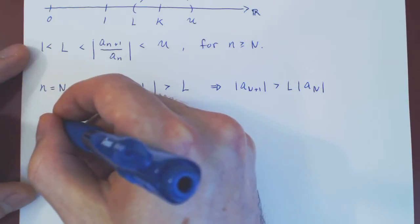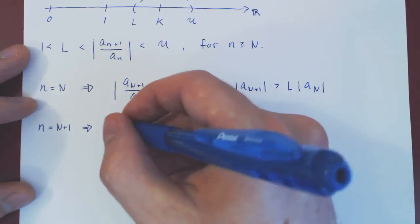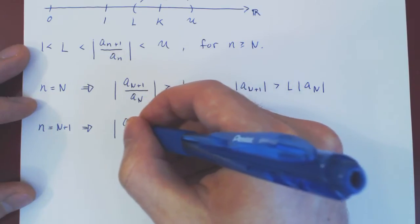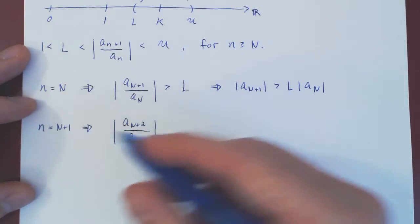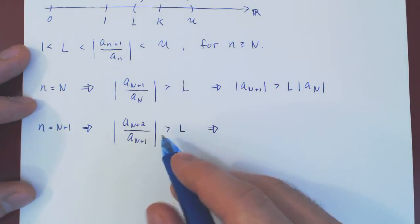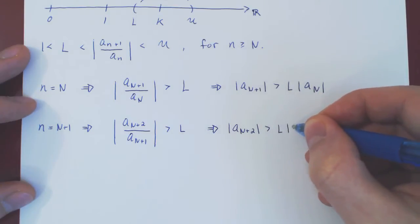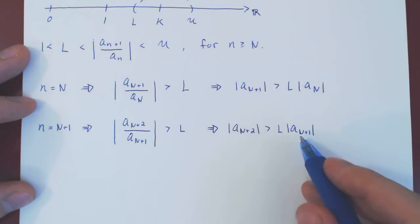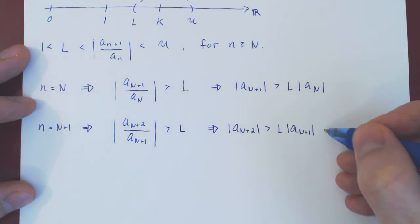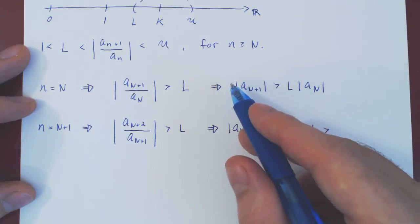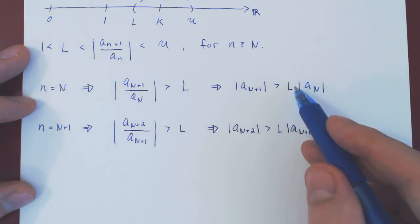Now take n to be N+1 and plug it into the inequality. Then n+1+1 is n+2, so |a_{N+2} / a_{N+1}| > L. Multiplying across by |a_{N+1}|, and using our previous inequality that |a_{N+1}| > L · |a_N|, we get |a_{N+2}| > L · |a_{N+1}| > L · L · |a_N| = L² · |a_N|, since L is positive.